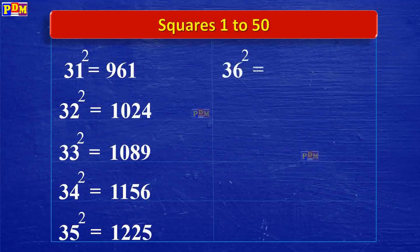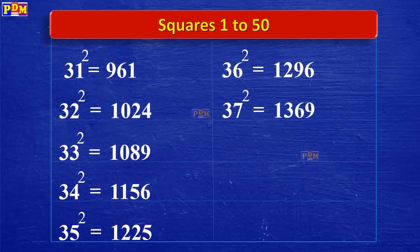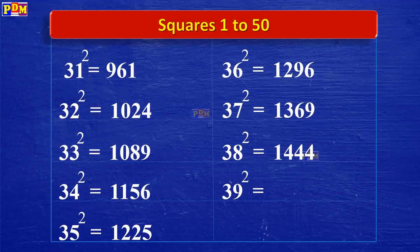36 squared is 1,296. 37 squared is 1,369. 38 squared is 1,444. 39 squared is 1,521. 40 squared is 1,600.